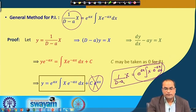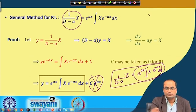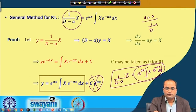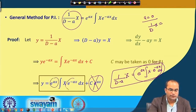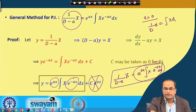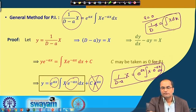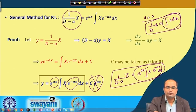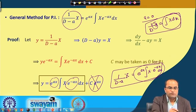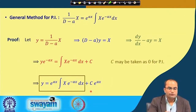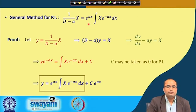In the simple case where a = 0, the result tells us that (1/D)X = ∫X dx — since e^0 = 1 on both sides. This is precisely what we expect: D is the differential operator, so 1/D is the integral operator. More generally, (1/(D−a))X = e^(ax) ∫X·e^(−ax) dx.